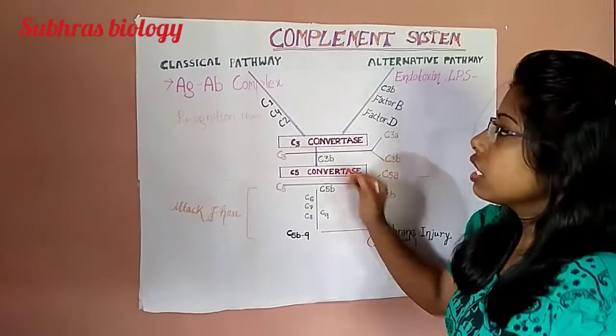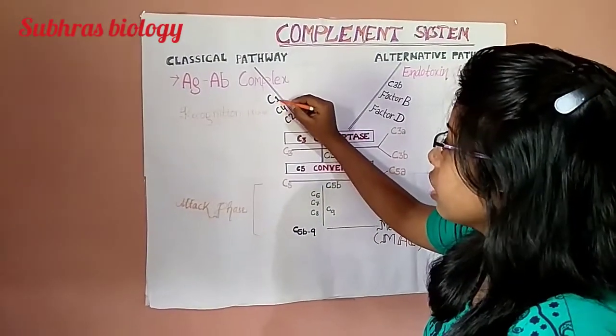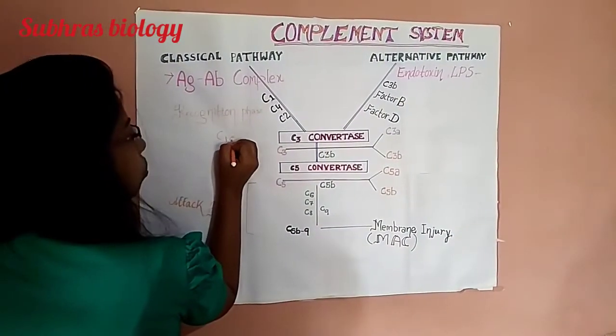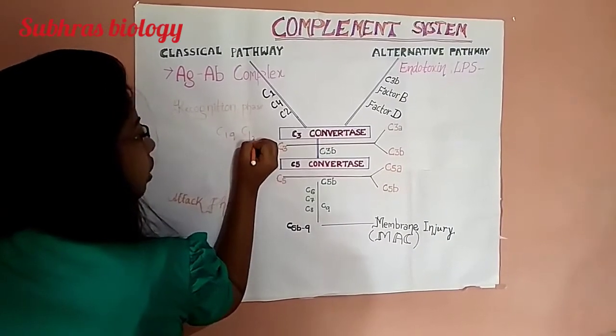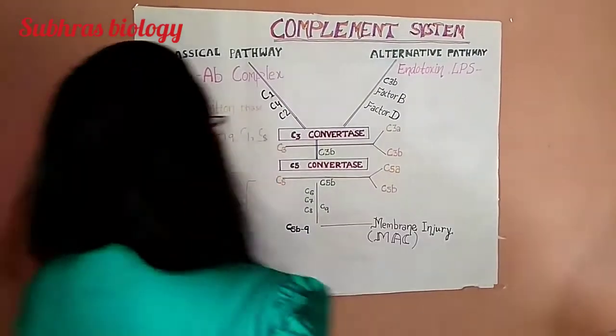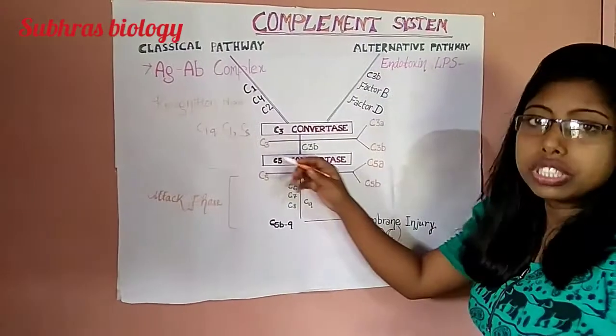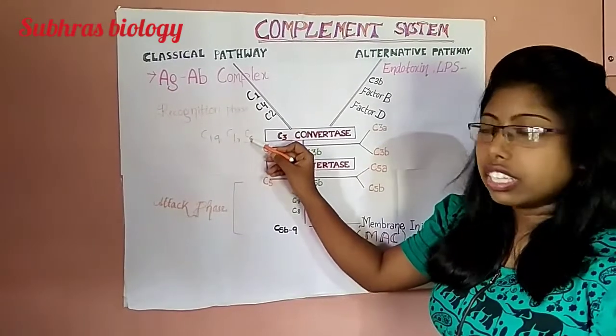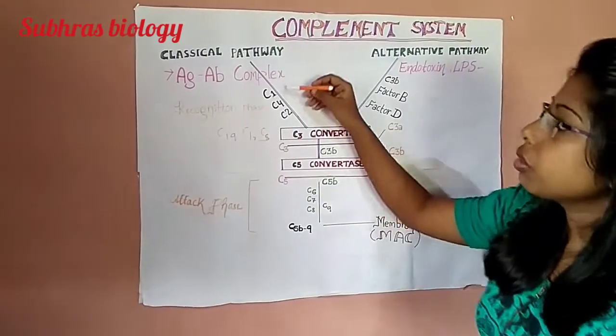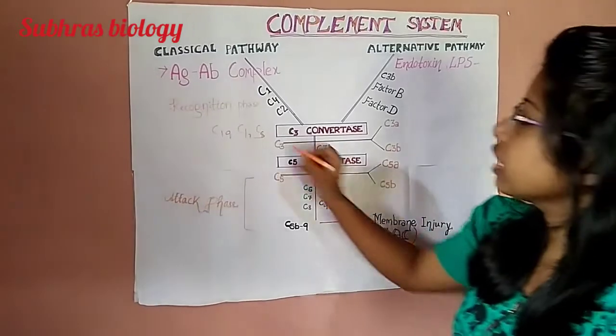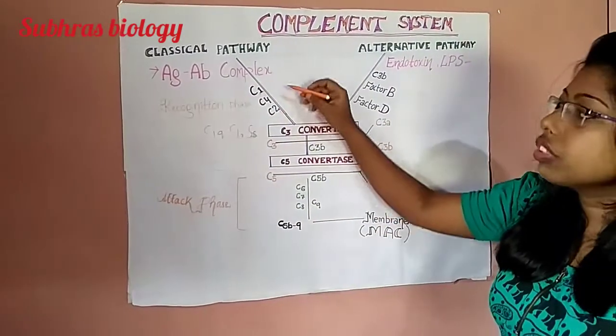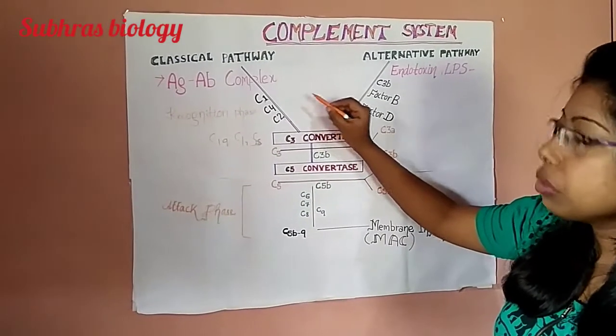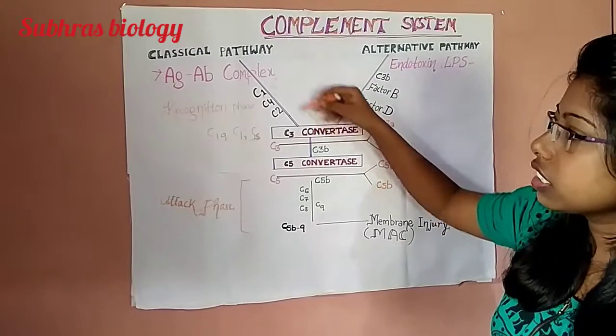What happens in classical pathway? C1, Complement 1, when it is attached with the antibody, C1 has three types: C1Q, C1R and C1S. When C1Q is attached with the antibody, it activates C1R and simultaneously C1S. When C1S is activated, it activates C4. C4 is divided or splits into C4A and C4B, in which C4A joins the complex.